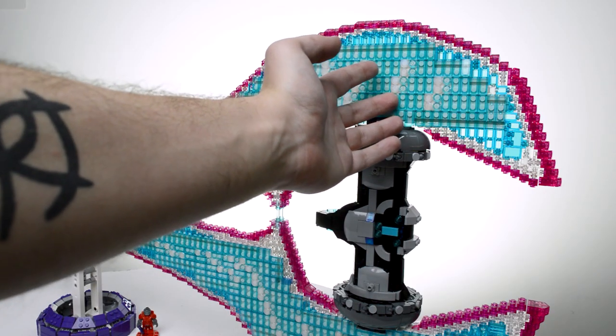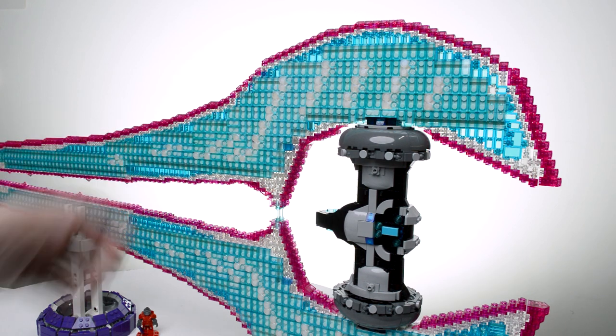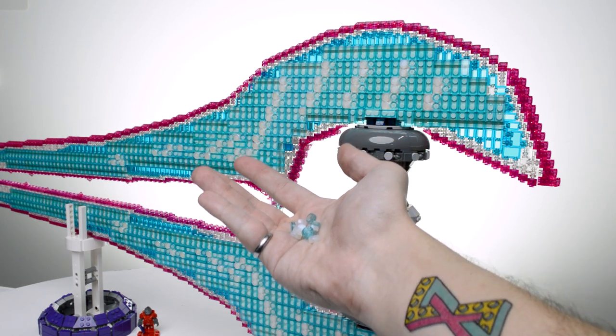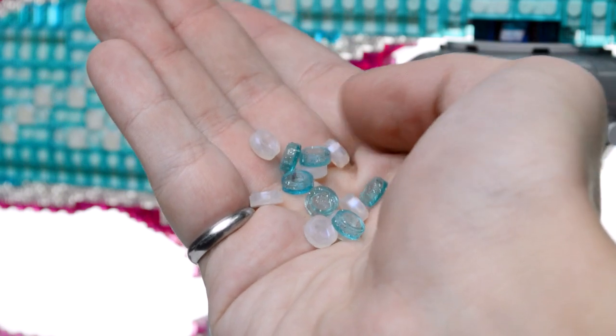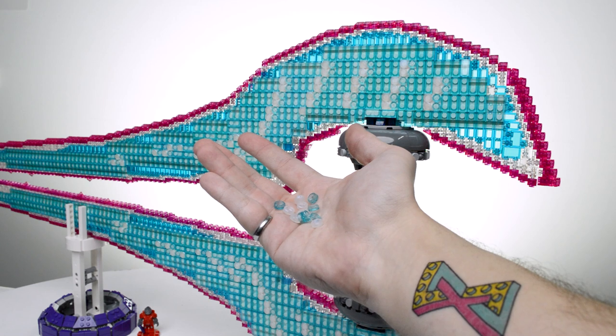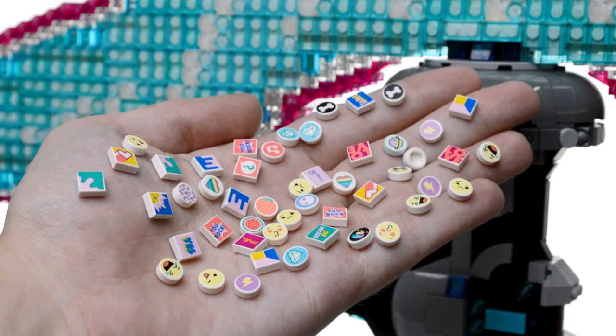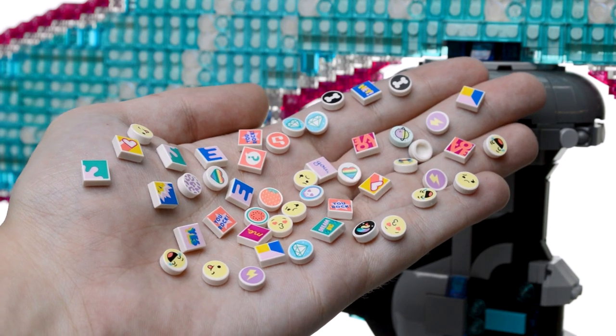To simulate the look of plasma energy flowing from hilt to tip, two types of 1x1 round tiles were used. Half of them are this trans blue with glitter, and half are this milky white with glitter. They come from the LEGO Dots packs. Totally unrelated. What am I going to do with all these emojis?